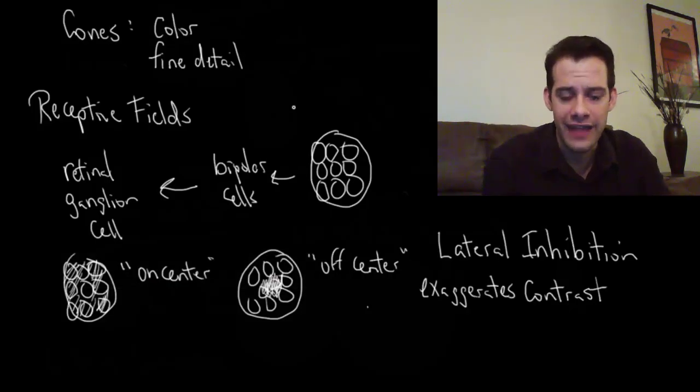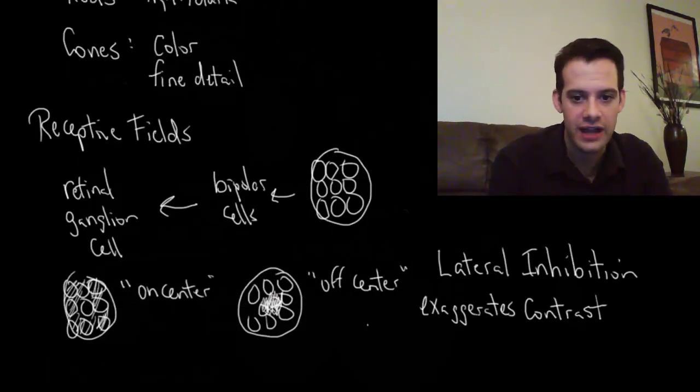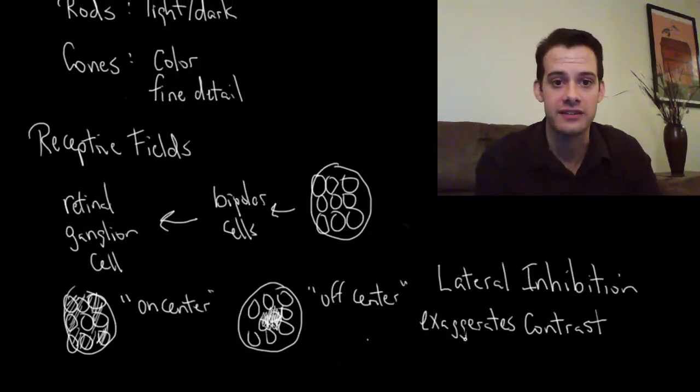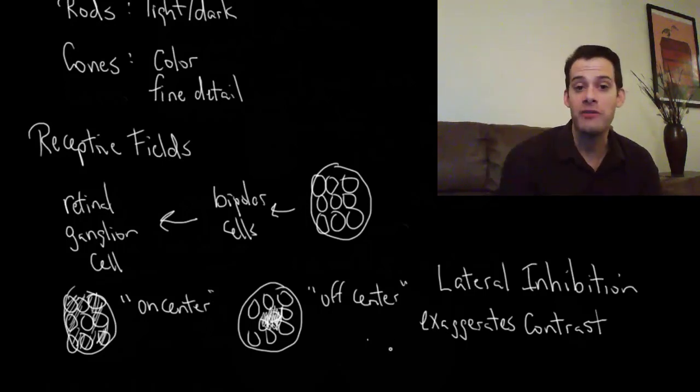Okay, so that's receptive fields, rods and cones, and this idea of lateral inhibition, on-center and off-center receptive fields. And this is to exaggerate the contrast that we see. I hope you found this helpful. If so, please like the video and subscribe to the channel for more. Thanks for watching.